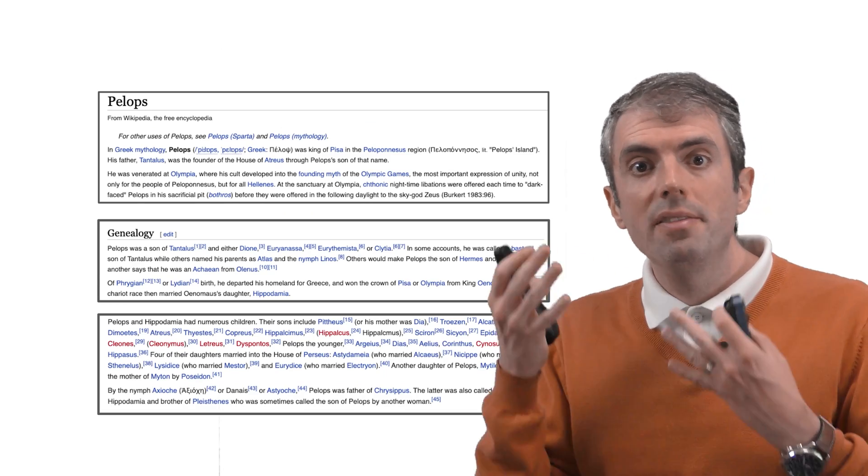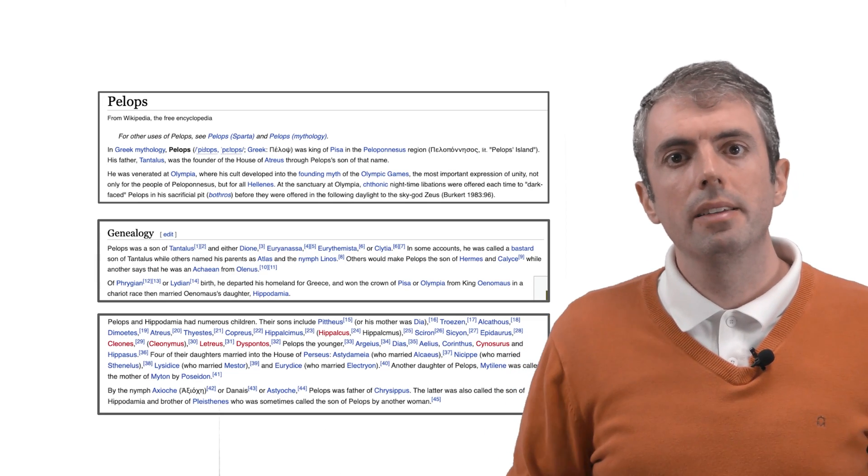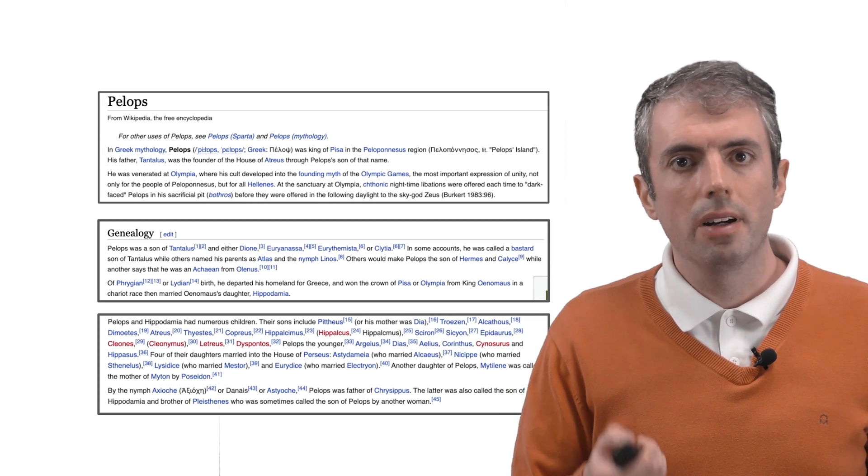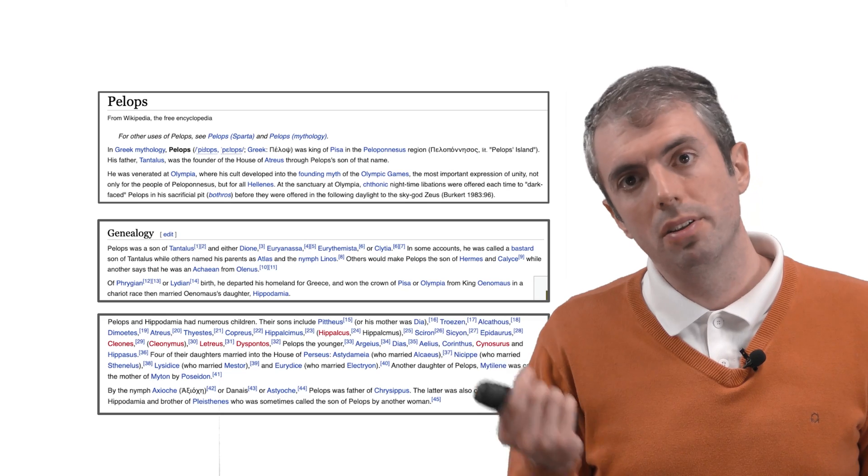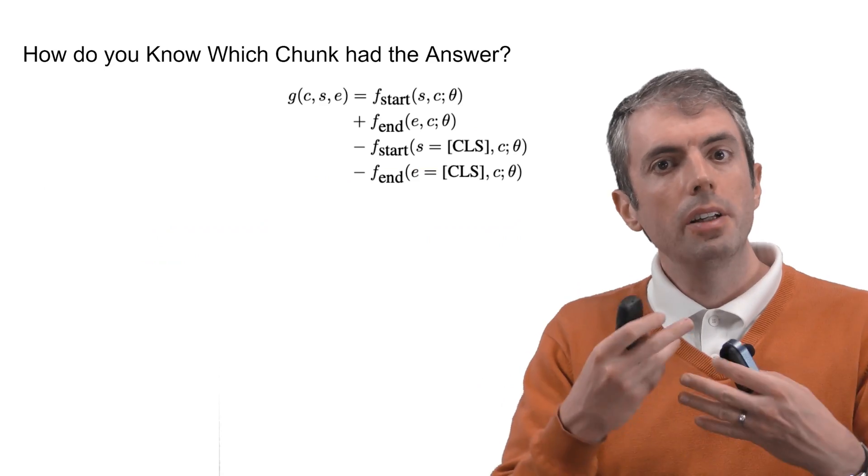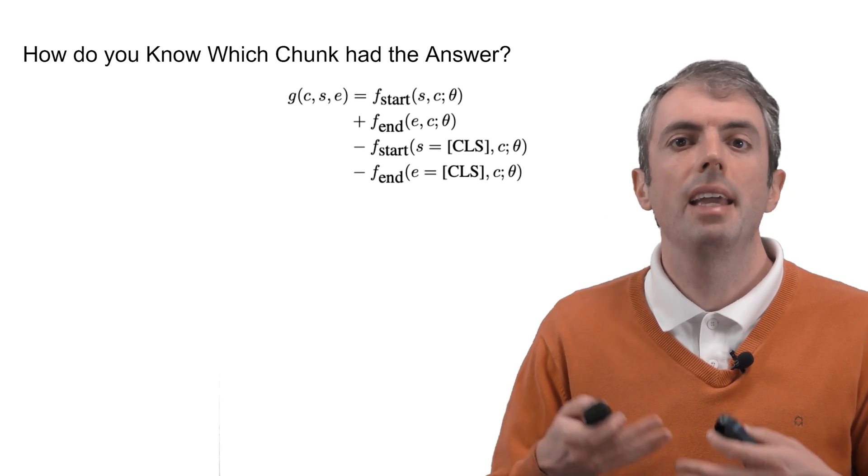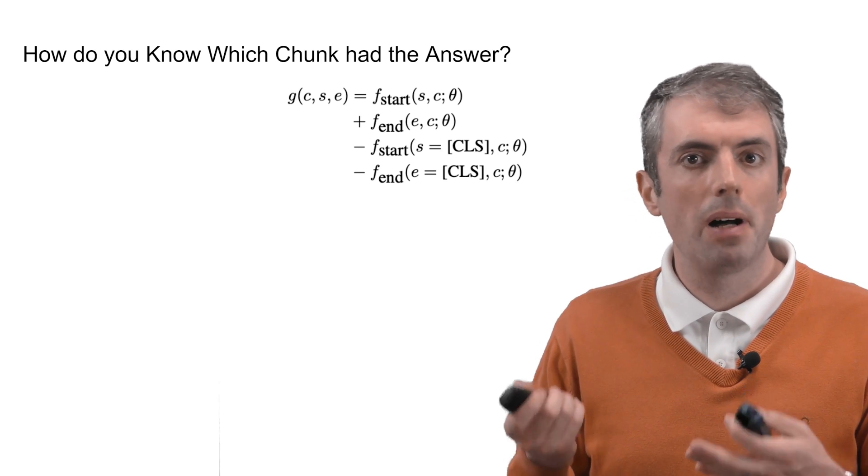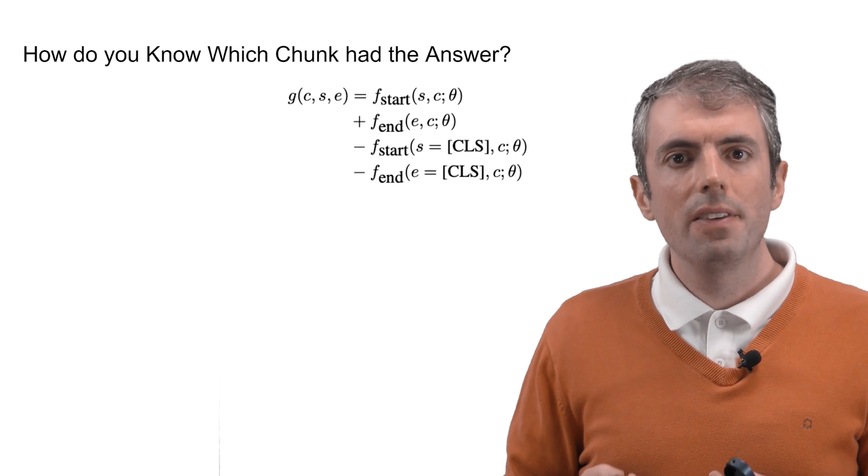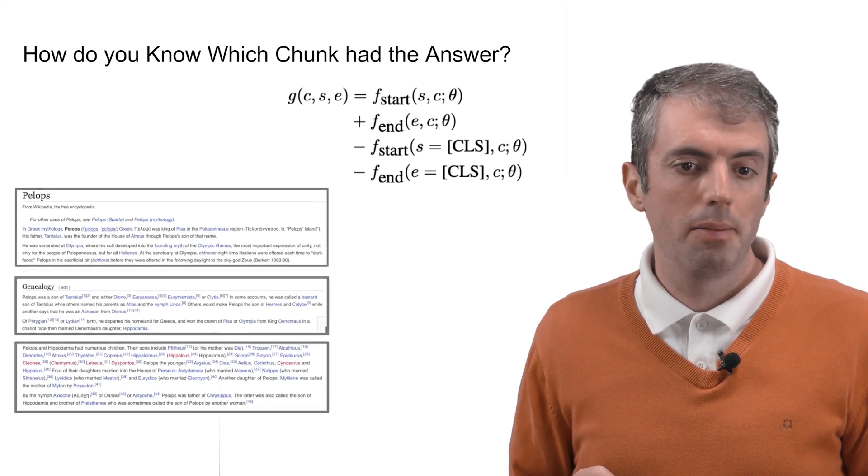But remember that we have a bunch of evidence passages. How do we know which one to pick? One way of doing this is to train passages with no answer to put the start and end position classifiers on the initial CLS token. Remember that guy? So you can compare how much the span classifier likes putting the span of the answer somewhere in the evidence versus putting it at the impossible span. This gives you a score for each of the possible candidates and you can use that to rank the possible answer spans.